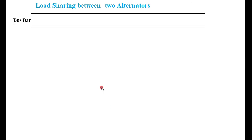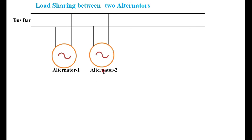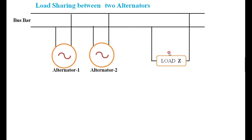Now we will see how the load is shared between the two alternators. Taking a simple per-phase diagram with a bus bar, I am representing alternator 1 and alternator 2 connected in parallel. A load is connected across the bus bar, and the two alternators are delivering current to meet the demand in the form of load.